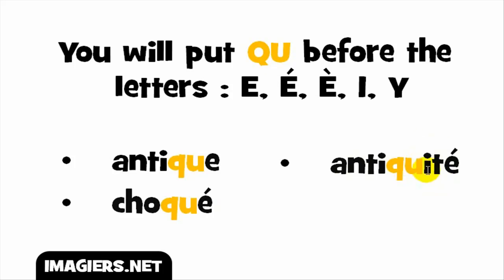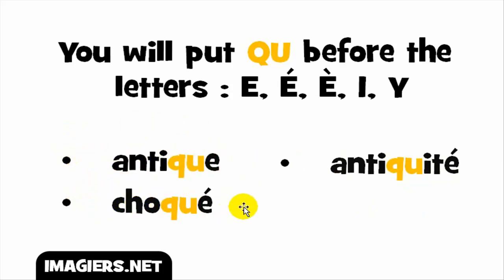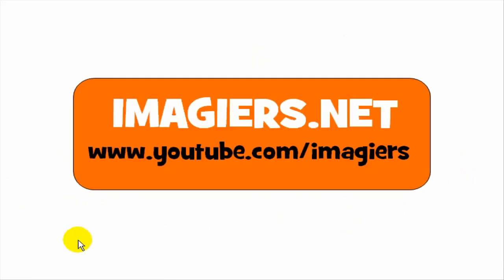The last example uses the E sound again, giving you /k/, and the full word is antiquité — antiquité. Let's review them one more time: antique, choqué, antiquité. I hope this lesson was useful — have a great day, bye bye!